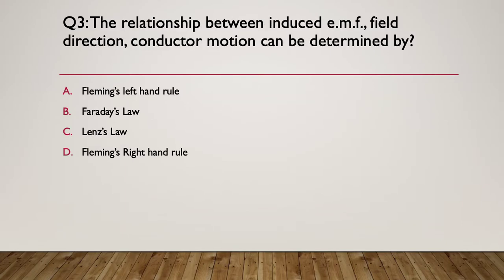Question three. The relationship between induced EMF, field direction, and conductor motion can be determined by: A: Fleming's left hand rule, B: Faraday's law, C: Lenz's law, or D: Fleming's right hand rule. Pause here.